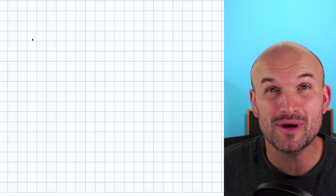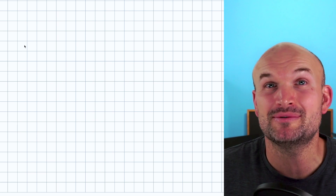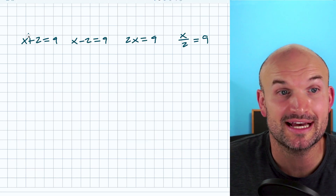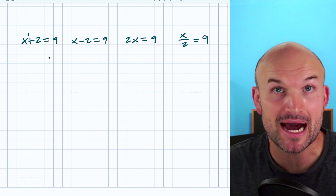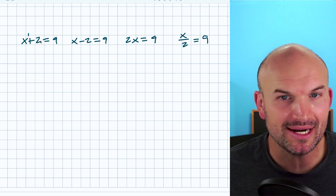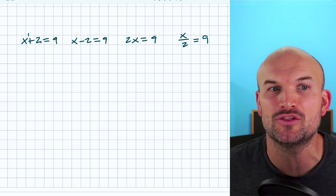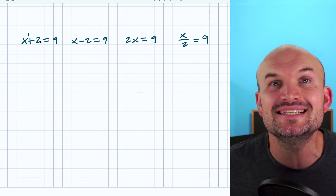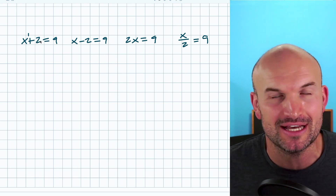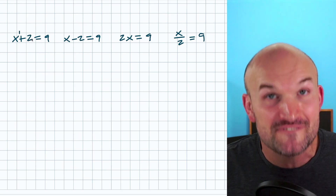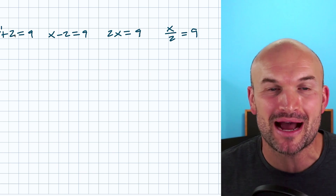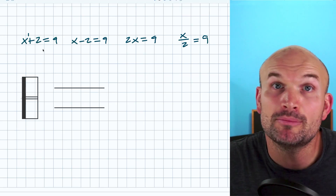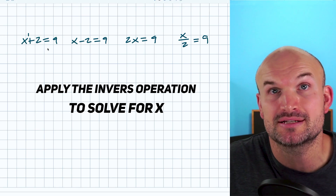Before we do that, let's just do a quick review of how we would solve a linear equation. These are all linear equations because the x has just been raised to the first power. When we wanted to solve these equations, what we did is what we called our inverse operation — we undid what was happening to the variable. These are very basic problems, but the whole point I want to convey is to apply the inverse operation to solve for x.